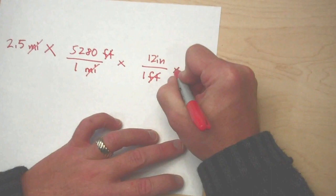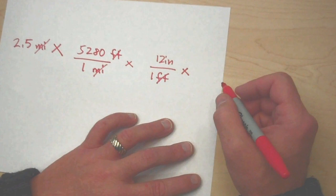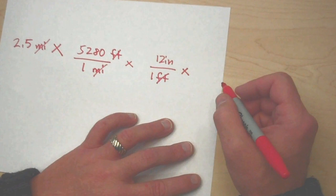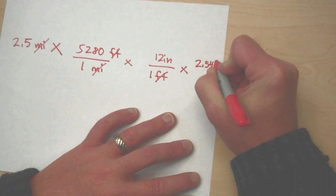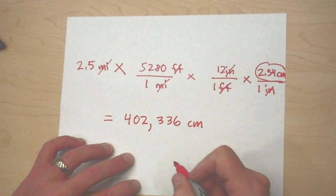Now continuing on, I want to be able to convert this into centimeters. So to make this work, I have to have inches in the bottom to cancel out the inches. So that would be 2.54 centimeters in one inch. So the inches cancel out and now I'm left with centimeters.